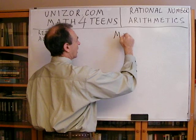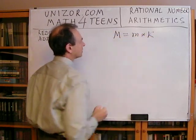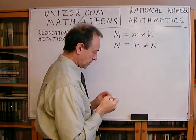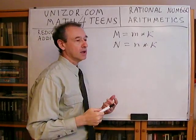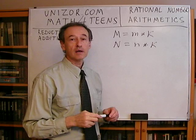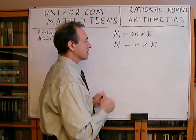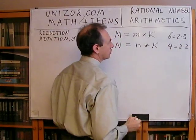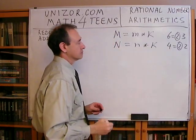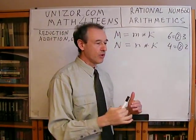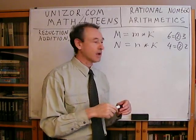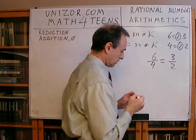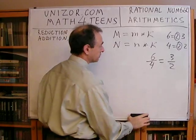Let's consider the integer M is the result of the multiplication of two other integers — M = m·K. What it means is that K is a common multiplier, or common factor, for M and N. Simple examples are 6 and 4: 6 is 2 times 3, and 4 is 2 times 2, which means 2 is common. So I'm trying to approach the problem of reducing the rational number — in this case, if you have 6/4, we know that this is 3/2. I would like to formally introduce this type of operation.